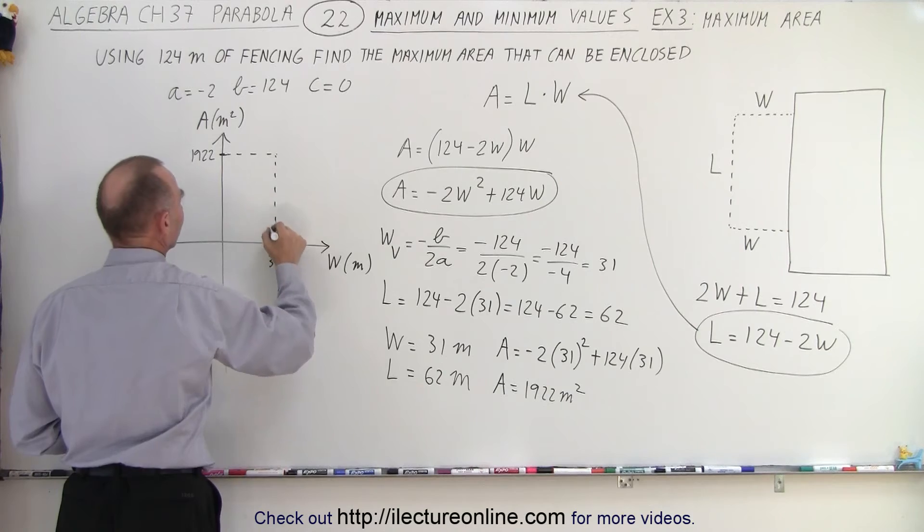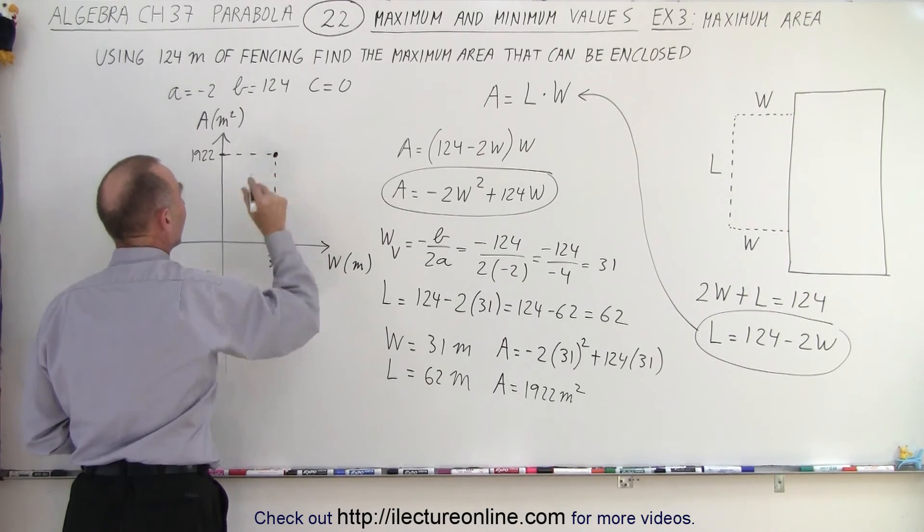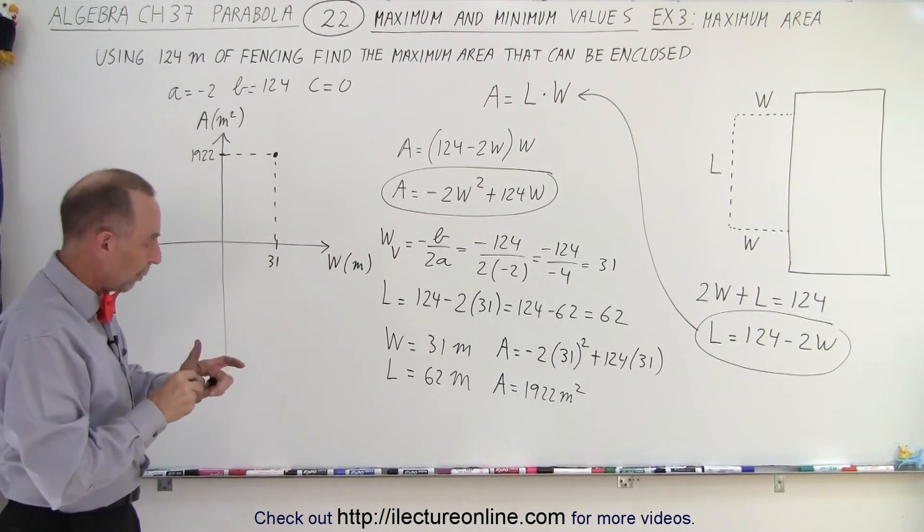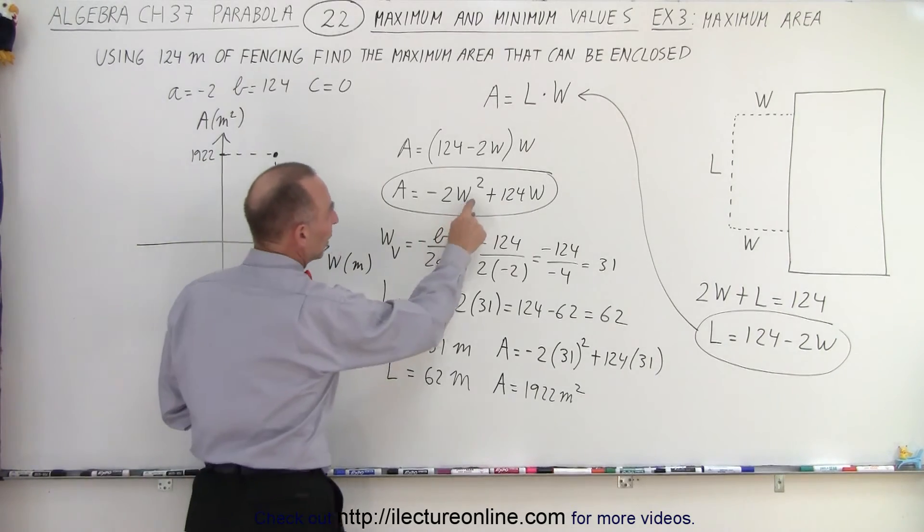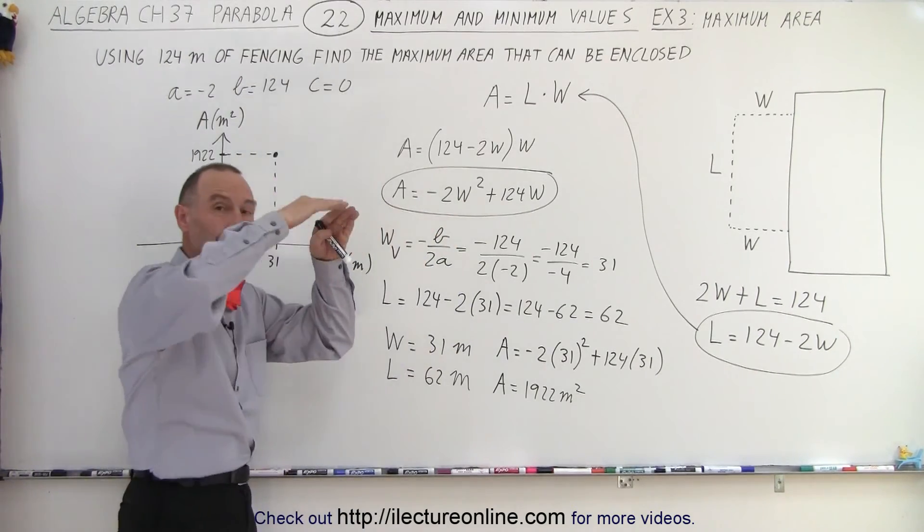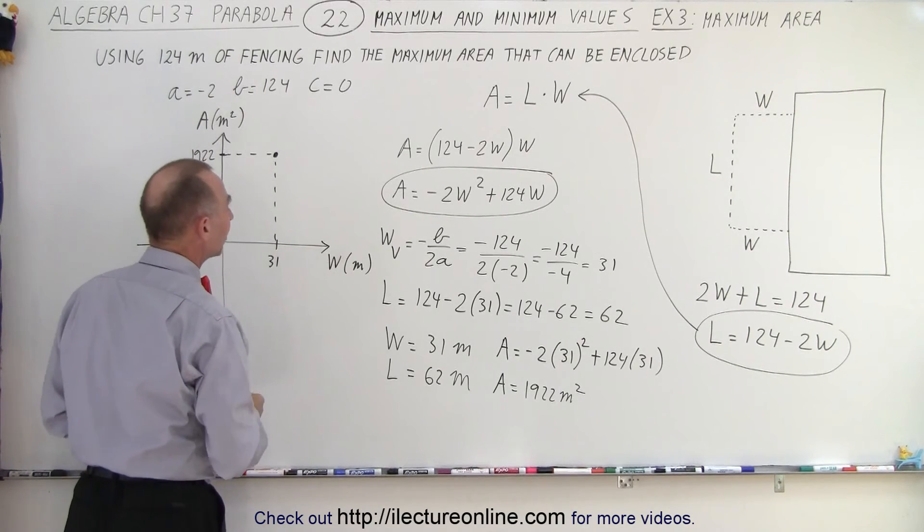So this would be where the vertex is. Now, does that parabola open upward or downward? When we look at the equation, notice the square term is negative, which means the parabola opens downward, which means we're going to have a maximum value.